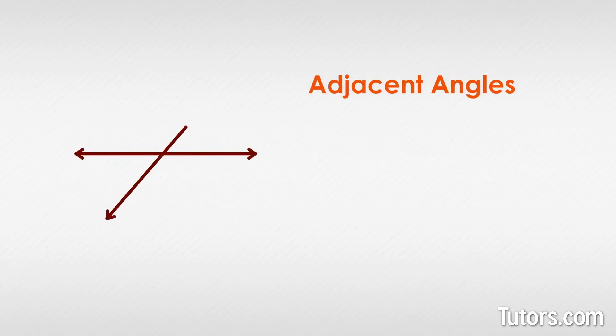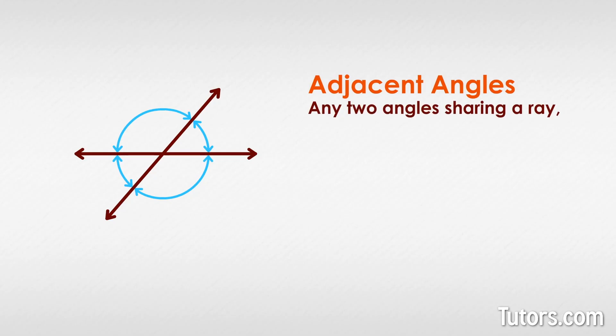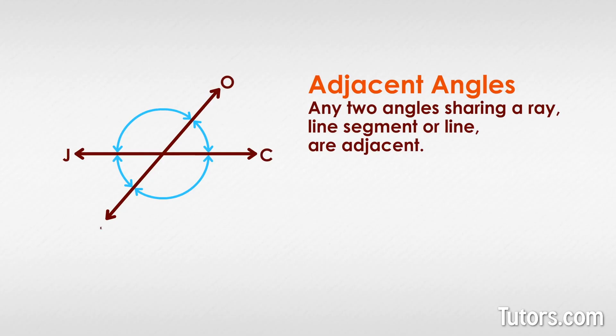When two lines cross each other, they form four angles. Any two angles sharing a ray, line segment, or line are adjacent. In the following drawing, line J-C intersects line O-K, creating four adjacent pairs and intersecting at point Y. Can you find them all?